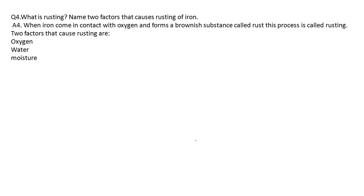What is rusting? Name two factors which cause rusting of iron. When iron comes in contact with oxygen and a brownish coloured substance forms, we call it rusting. Two factors which cause rusting are: oxygen and water or moisture or water vapour — you can write any of these.